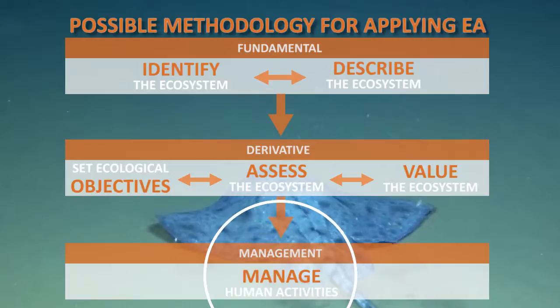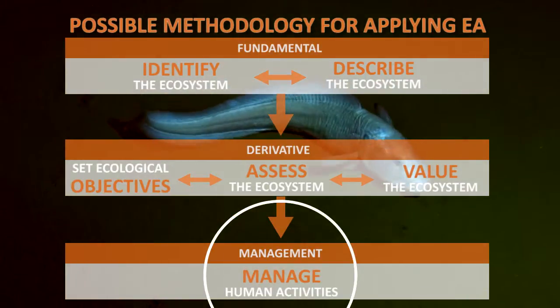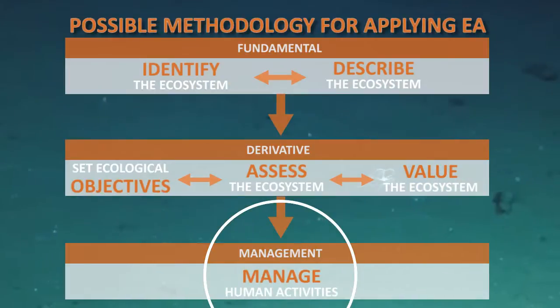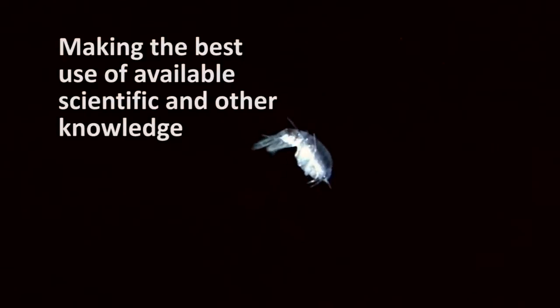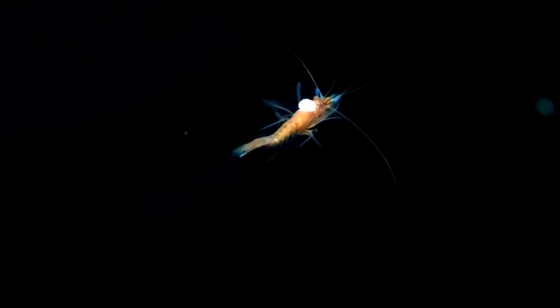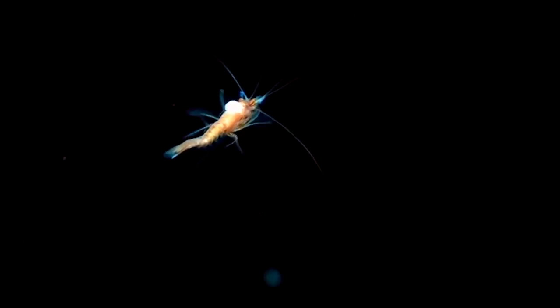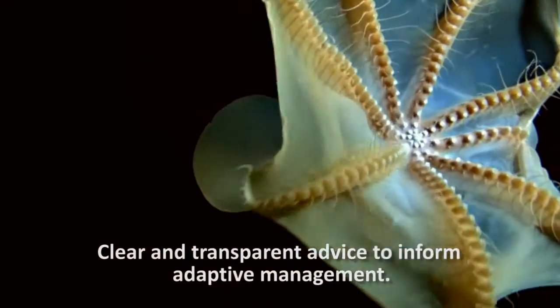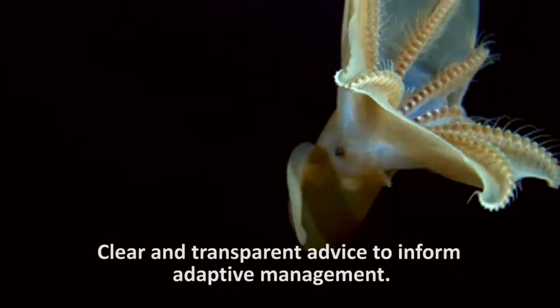The sixth element is to manage human activities to maintain the agreed ecological objectives. The process occurs outside the Arctic Council, making the best use of available scientific and other knowledge. The outcomes need to be translated through a scientific advisory process into clear and transparent advice to inform adaptive management.